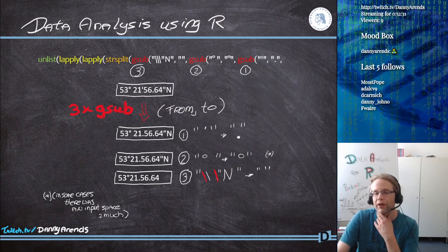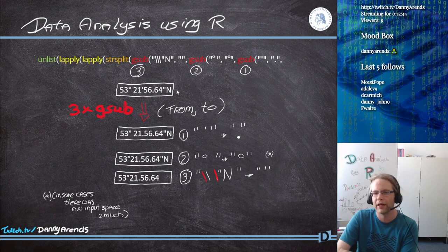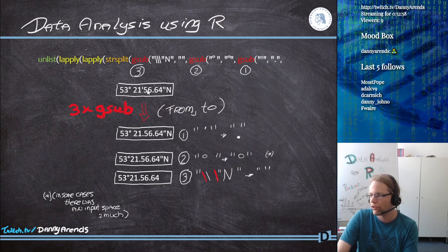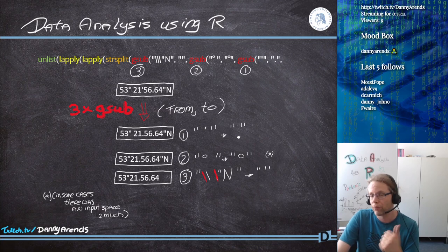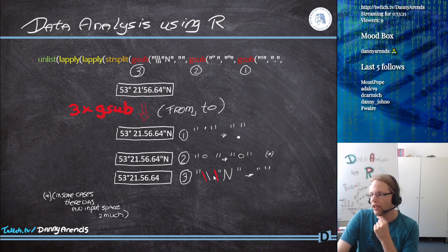The input format looks like '35° 21' 56.64'' N'. Three gsubs: first, convert certain symbols to dots so I only have to split on the dot and degree symbol. Then fix the space after the degree symbol. Then substitute out the 'N' and 'E' direction indicators. I end up with something like '53.21.56.64', and now the next step is to split this into four individual numbers: degrees, minutes, seconds, and milliseconds.